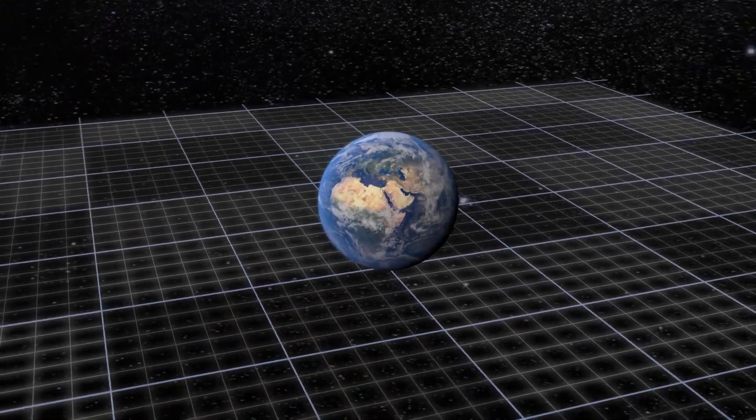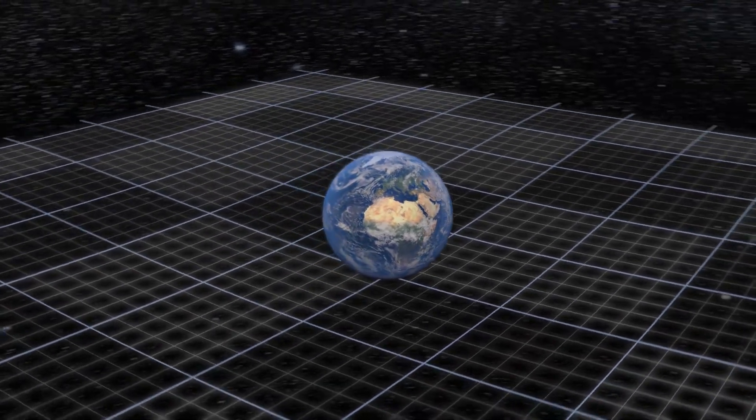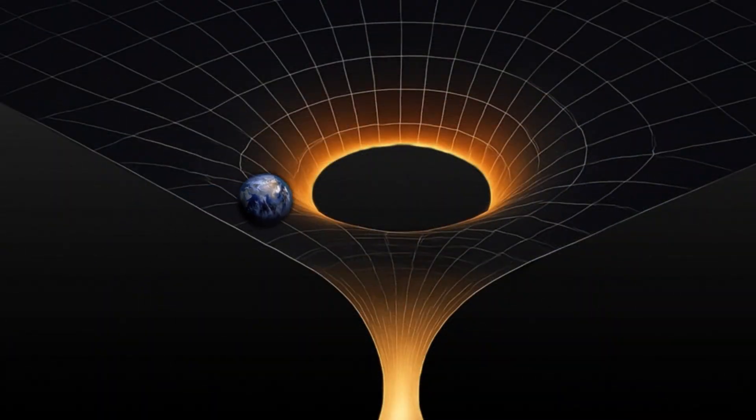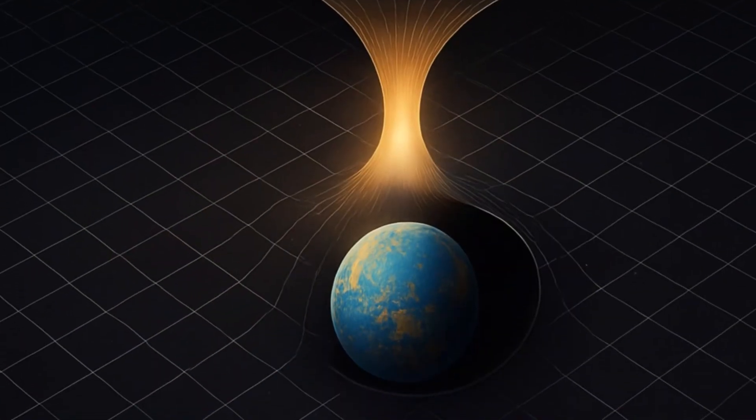A wormhole works like this, but instead of bending paper, it bends the four-dimensional fabric of spacetime. The shortcut is not through regular space, but through the geometry of spacetime itself.